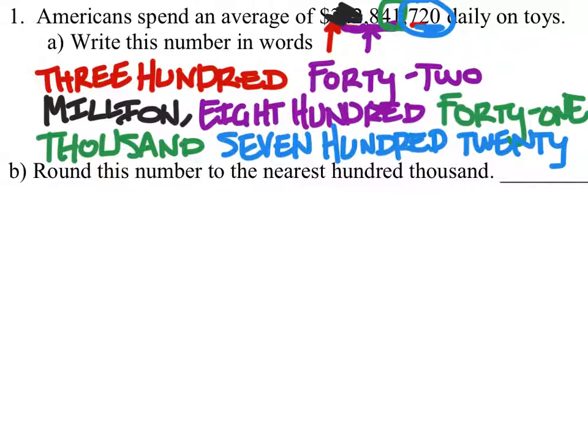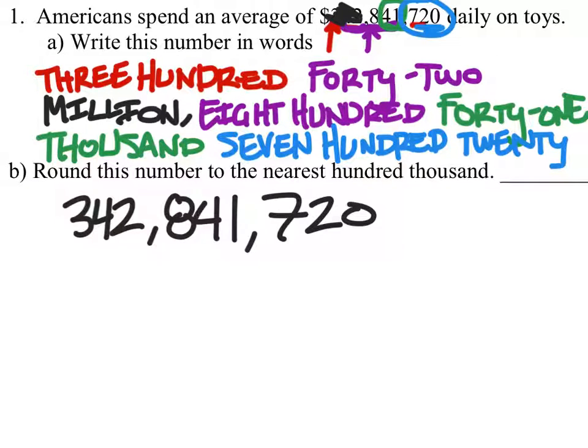Part B, we have round this number to the nearest 100,000. So I've rewritten the number here. And we're going to look specifically at the 100,000's position, which is the 8 right here. Now since we're rounding it to the 100,000's, we've got to look at the number to its right immediately.